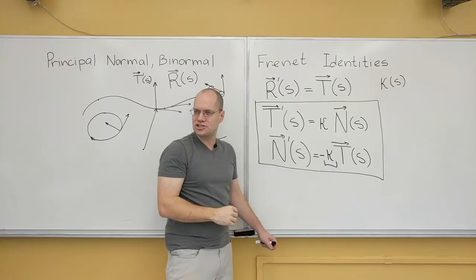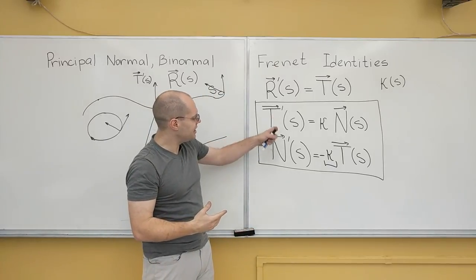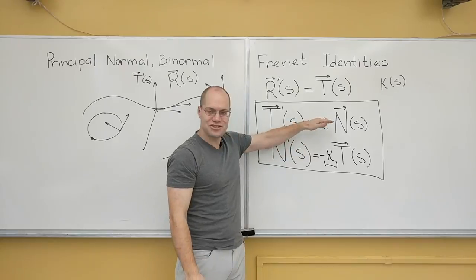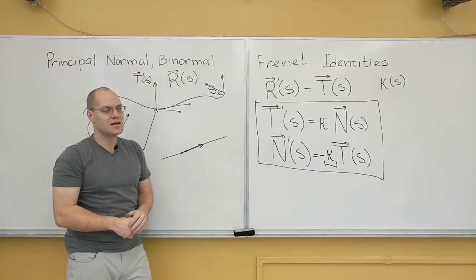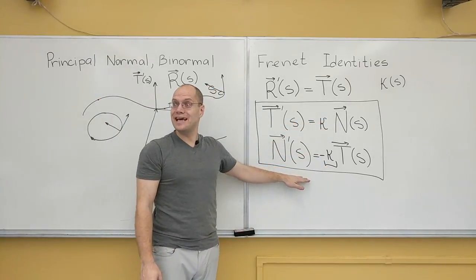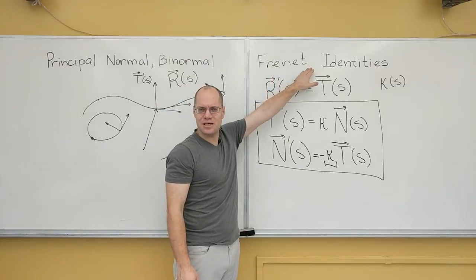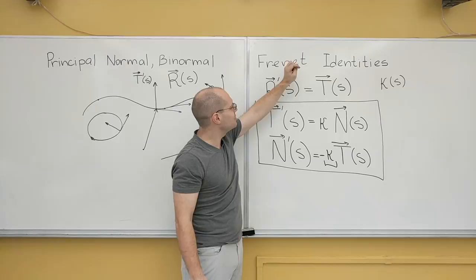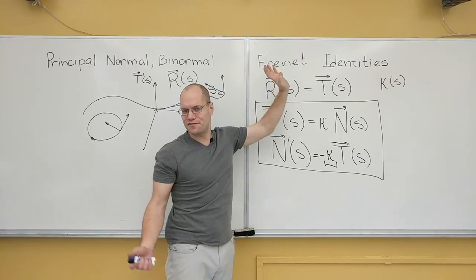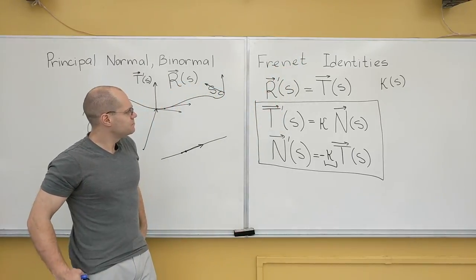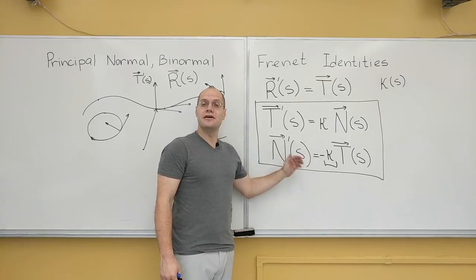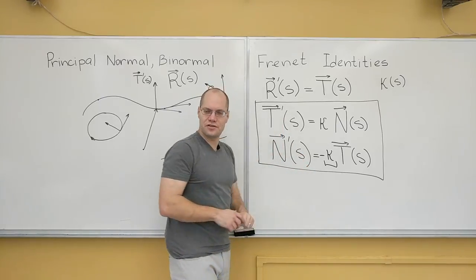Two unknowns, two equations. The unknowns are tangent and the normal. The equations are first one and second one. These are called one of the Frenet. There's a second name sometimes that comes with it. It's in my book, but I don't know what it is. I don't remember what it is. Don't know anything about Frenet either, I'm ashamed to admit. But this is one of the Frenet identities. These become a lot more interesting when we consider the curve in three dimensions.